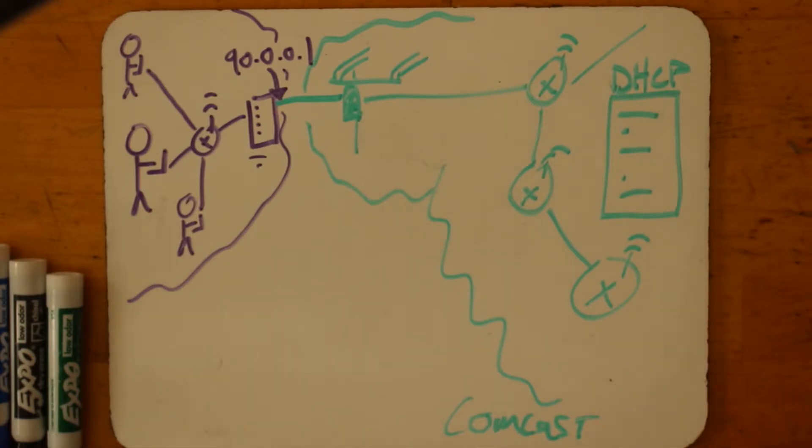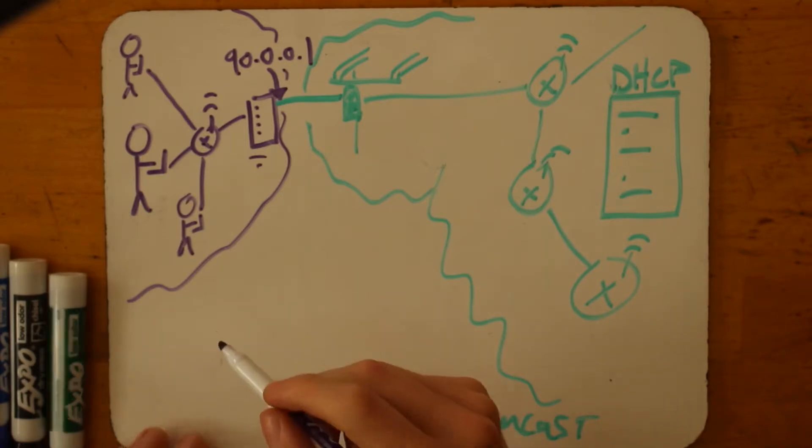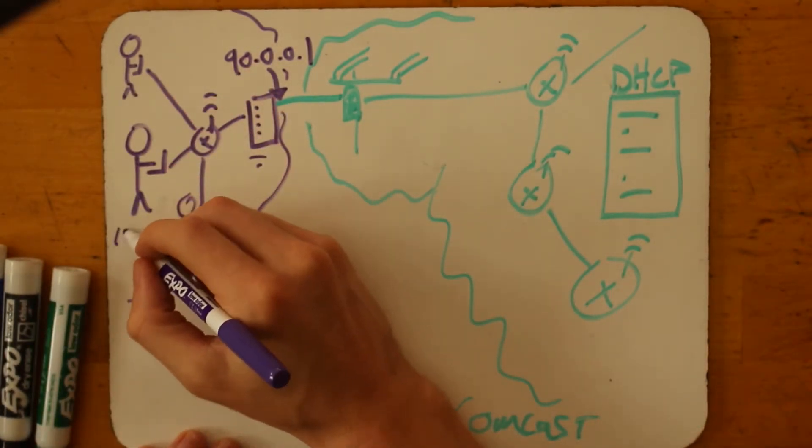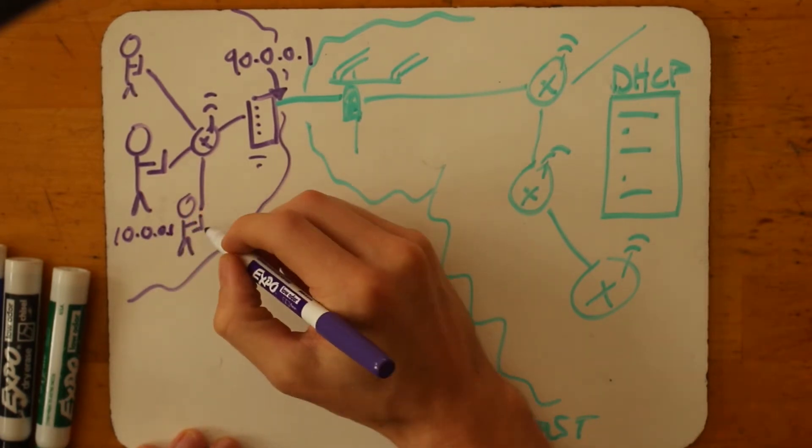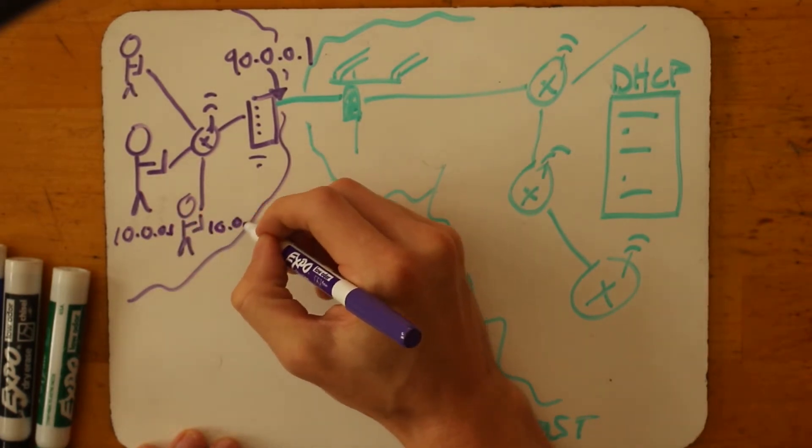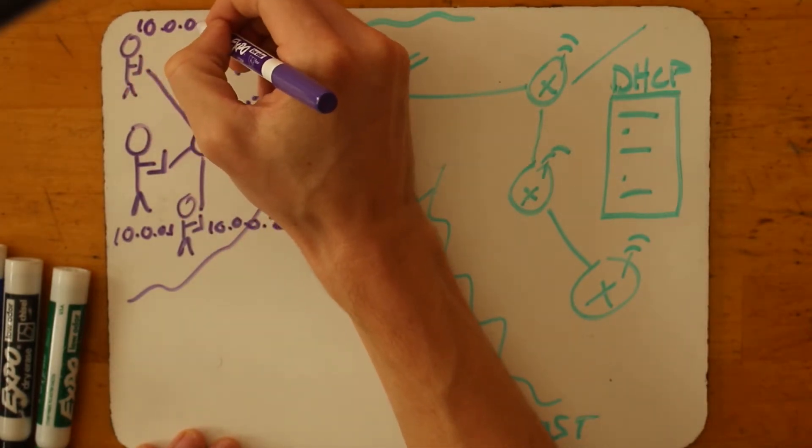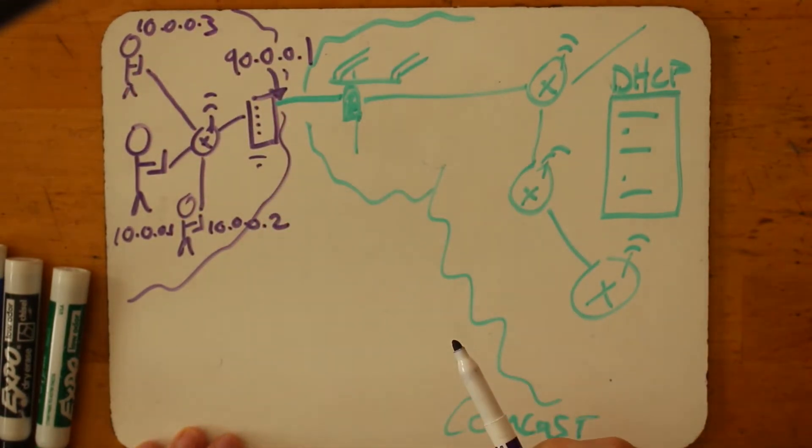Okay. So the external world sees this 90.0.0.1 address for any of the three of us communicating. And if we do something like open up our terminal and type ifconfig or ipconfig and try to determine what our IP address is, chances are all three of us will have something on like the 10 blocks, say 10.0.0.1 and 10.0.0.2 and 10.0.0.3.